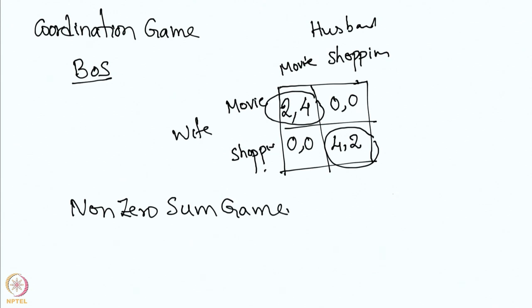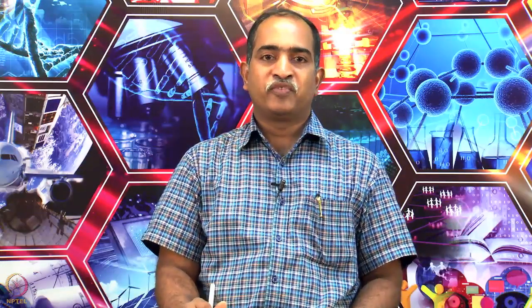Now we will see another very important example known as the Prisoner's Dilemma. This example was framed by Merrill Flood and Melvin Drescher working at RAND Corporation in the 1950s, and it was Alan Tucker who formalized the version we are going to see now.